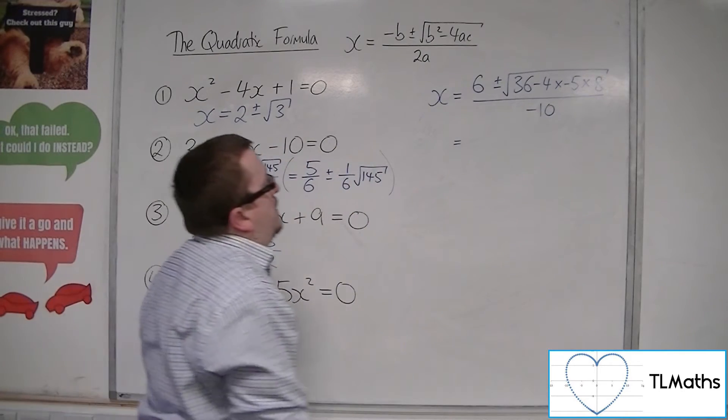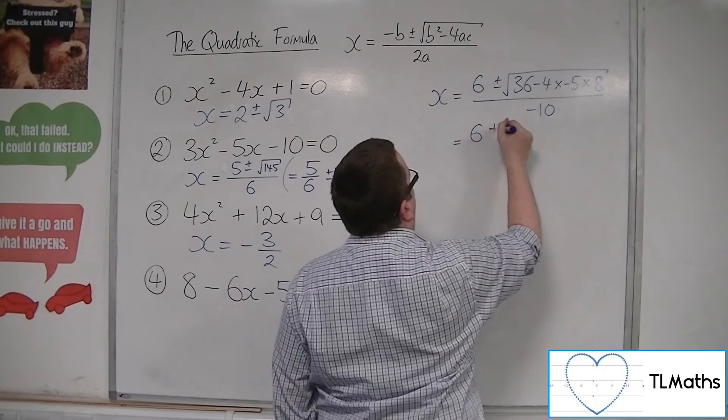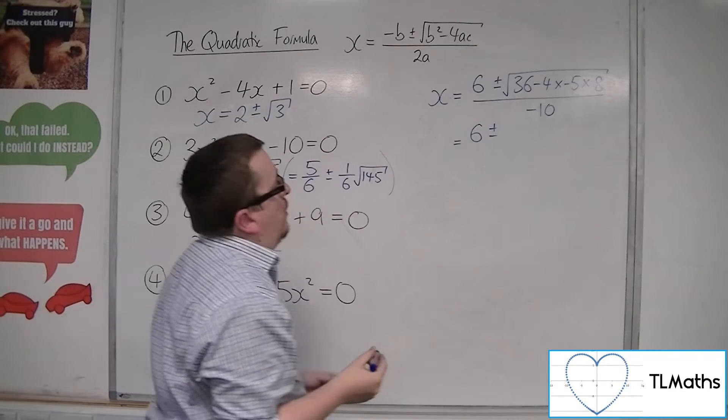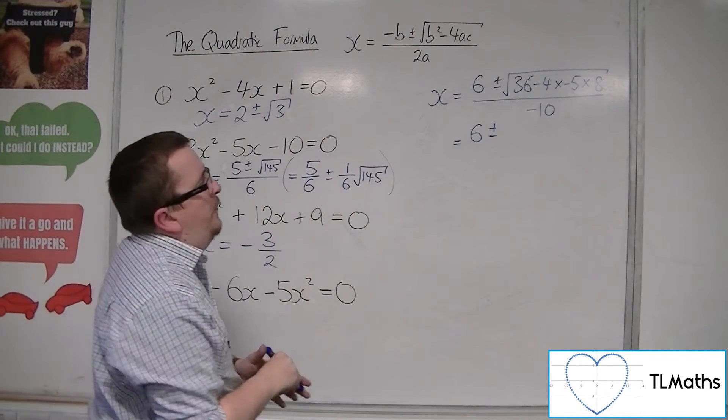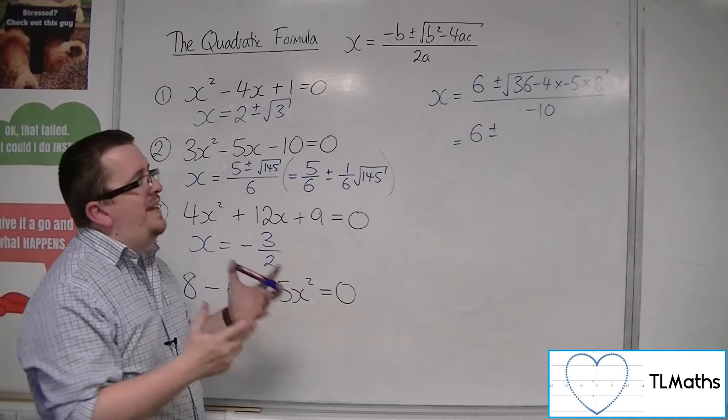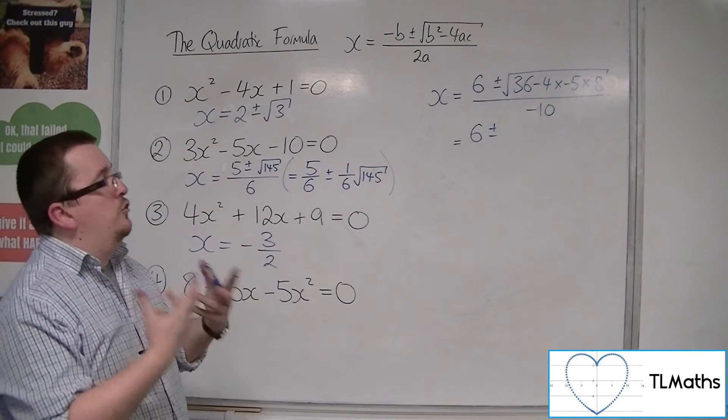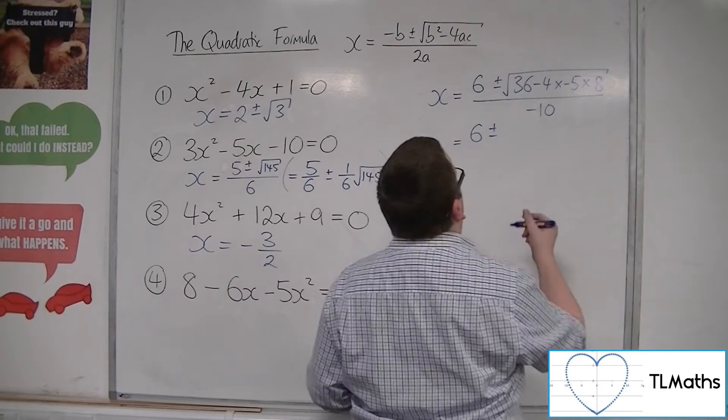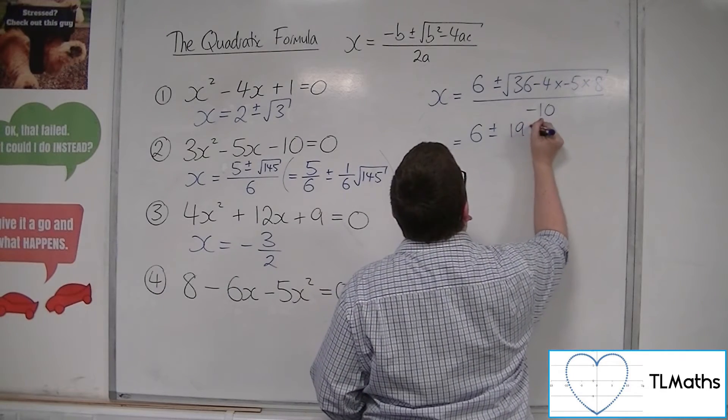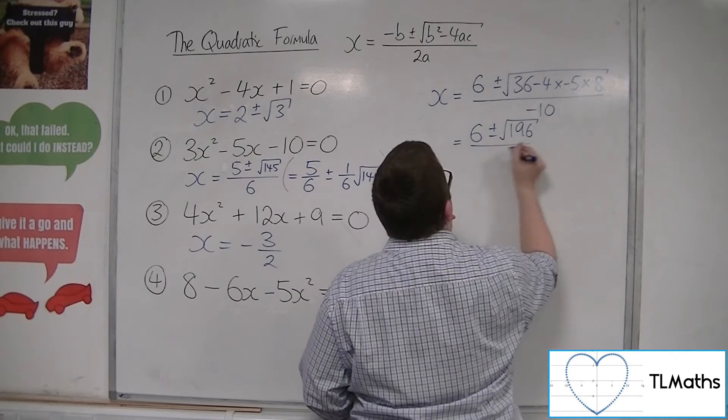Okay, so we've got the 6, plus or minus, now minus 4 times minus 5 is 20, 2 times 8 is 160, so we're going to get 196 square rooted, all over minus 10.